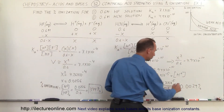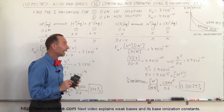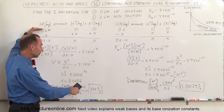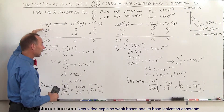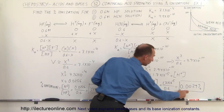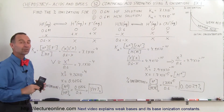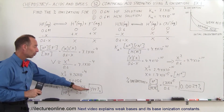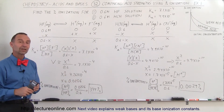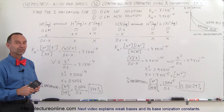That's a much smaller number. The percent ionization for hydrocyanic acid is much smaller than for hydrofluoric acid, indicating it is a much weaker acid. This demonstrates that a very weak acid will have a very small percent ionization, a less weak acid will have a greater percent ionization, and a strong acid will have 100% ionization. That's how we use this information to find the relative strength of acids.